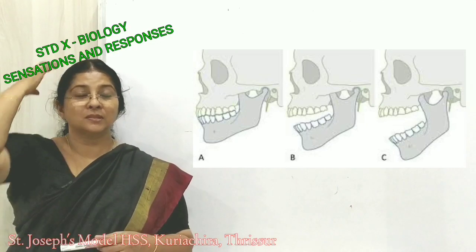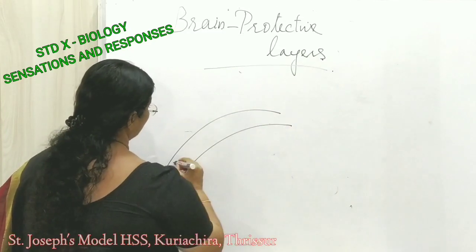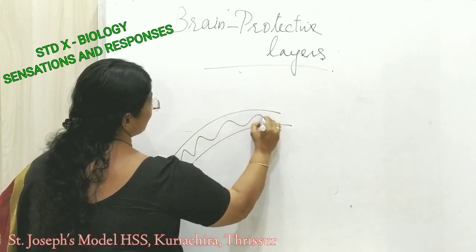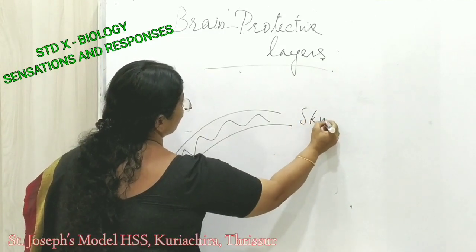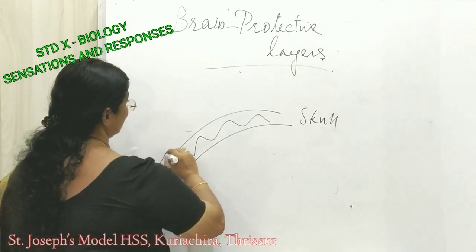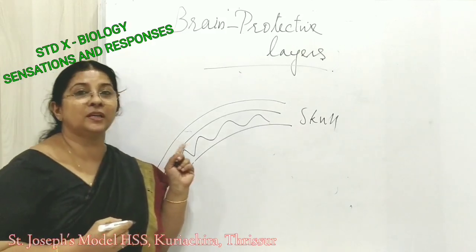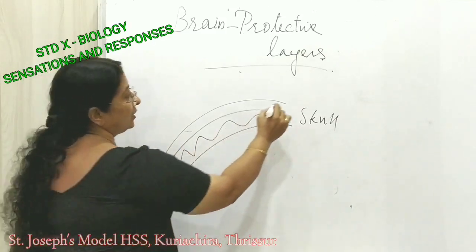The skull forms the head in all vertebrates. I will draw a diagram on the board to show the protective layers of the brain. This layer here is the bony cranium or skull, and above the skull there is another layer — the subcutaneous tissue layer, otherwise called the skin.